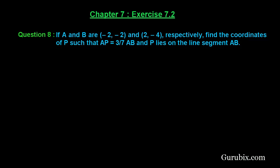Welcome friends, let us solve question number 8 of exercise 7.2 of chapter 7. The question says: if A and B are (-2, -2) and (2, -4) respectively, find the coordinates of point P such that AP equals 3/7 times AB and P lies on the line segment AB.